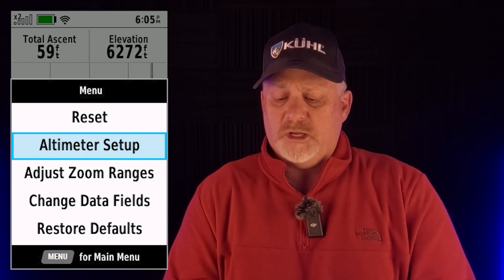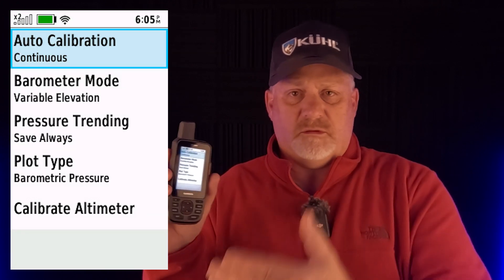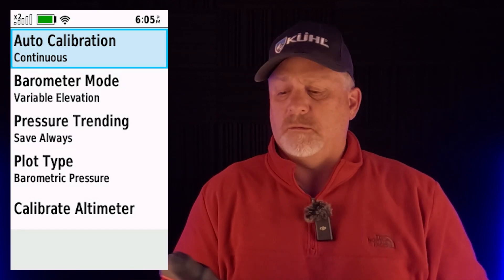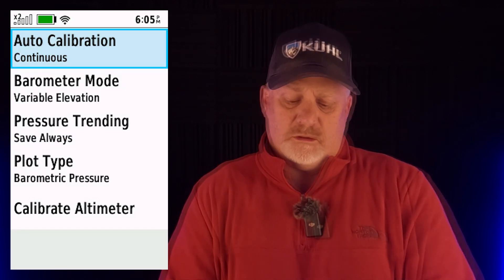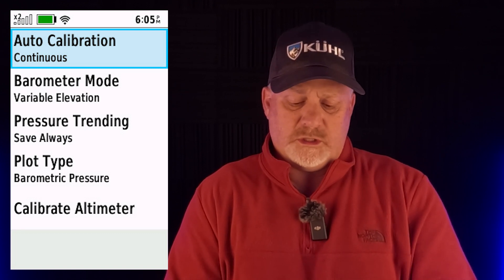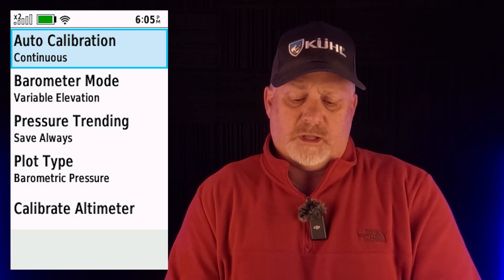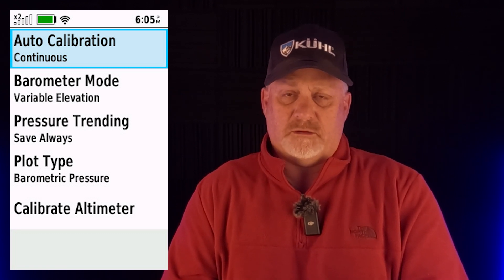When I go into altimeter setup, you can see everything it shows here: auto calibration, barometer mode, pressure trending, plot type, and calibrate altimeter.